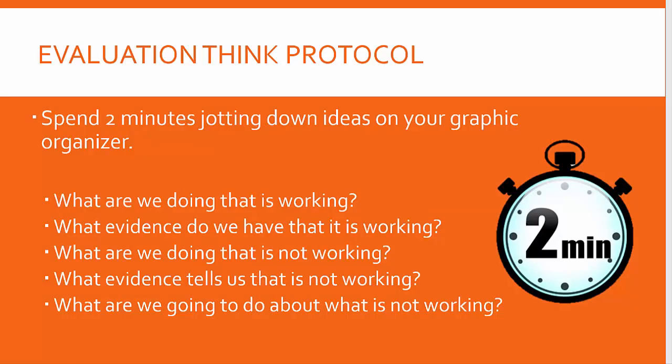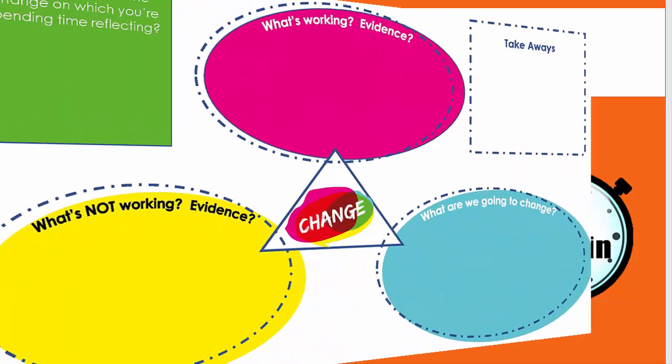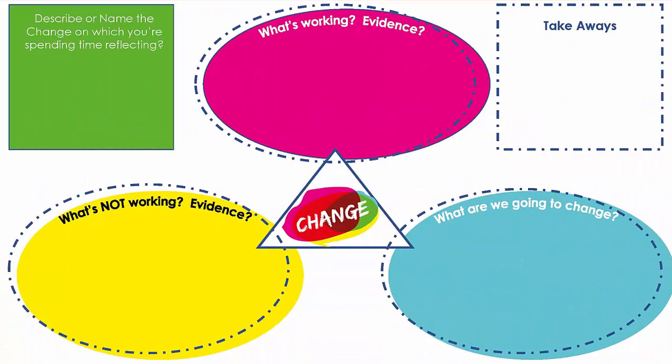We're going to do a two-minute evaluation think protocol. You'll have two minutes to jot down ideas on a graphic organizer, which is also linked in the module. While you're there, think about your change initiative: What are you doing that's working? What evidence do you have? What's not working, and what evidence tells you that? And what are you going to do about what's not working? Here's the visual of our think evaluation protocol — go ahead and pause here to give yourself two minutes.